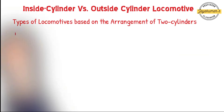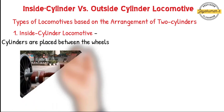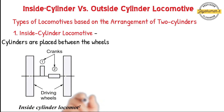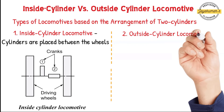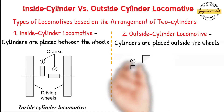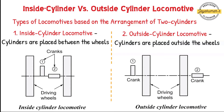As you can see, when both cylinders are placed between the driving wheels, it is called an inside cylinder locomotive. Whereas in an outside cylinder locomotive, the cylinders are placed outside the wheels rather than in between the two wheels, as shown in the schematic sketch.